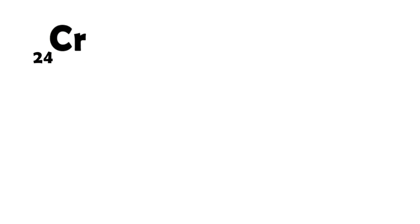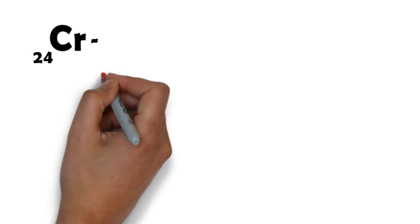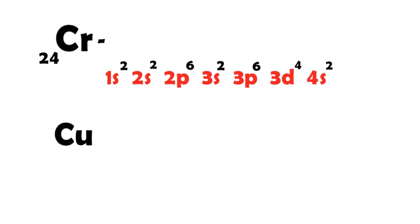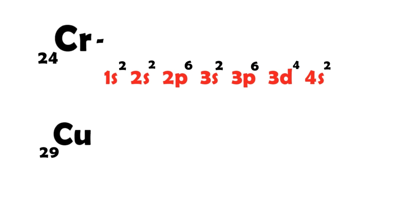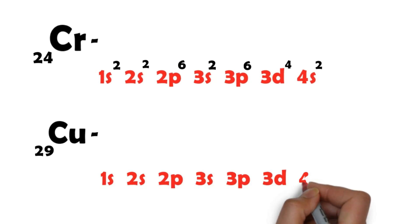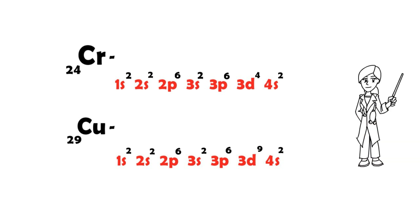Why do we call them VIPs? Let's take a look at Chromium and Copper electronic configurations. Chromium's electronic configuration is 1s2, 2s2, 2p6, 3s2, 3p6, 3d4, and 4s2. Copper's electronic configuration is 1s2, 2s2, 2p6, 3s2, 3p6, 3d9, and 4s2.